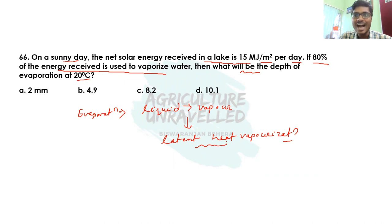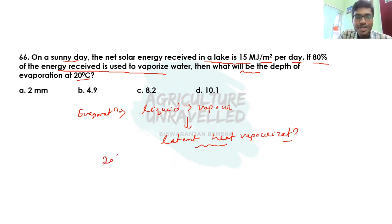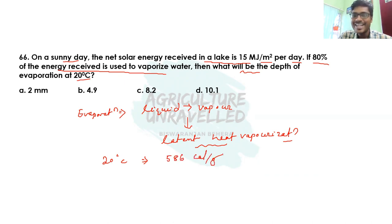This latent heat of vaporization is not constant throughout the temperature range. If temperature is higher, less heat is needed for vaporization. At 20 degrees Celsius, the energy needed for this evaporation process is 586 calorie per gram of water — meaning 586 calories are needed to evaporate one gram of water. This can also be expressed as 586 kilo calorie per kg of water.